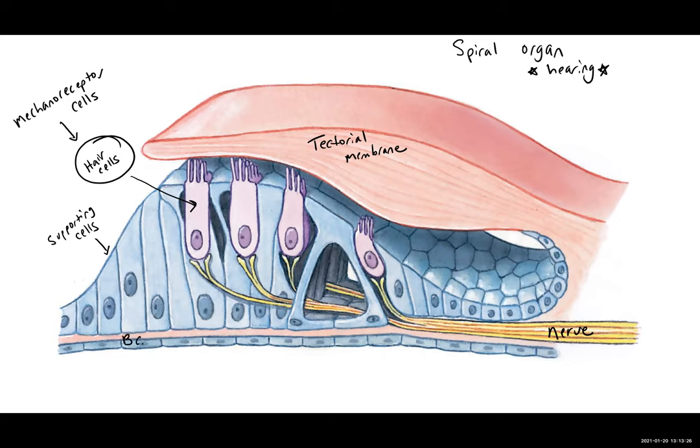At the base here, we have the basilar membrane. The sound wave has been converted to a pressure wave in the perilymph. This causes the basilar membrane to move up and down like a wave, and the stereocilia of the hair cells bump against the tectoral membrane. Depending on how aggressively they bump and whether they're bent left or right, that information gets sent on through the nervous system and is interpreted as sound.